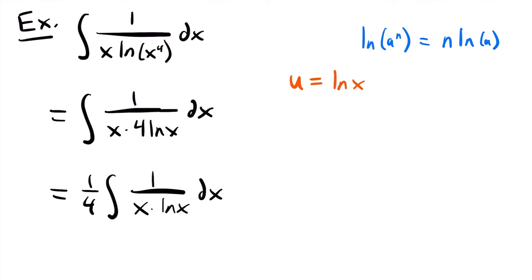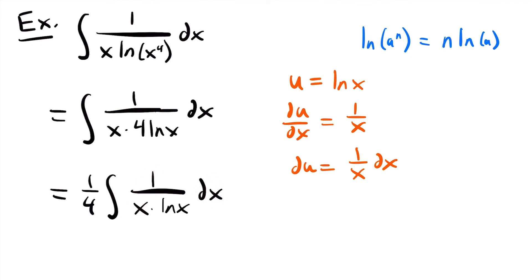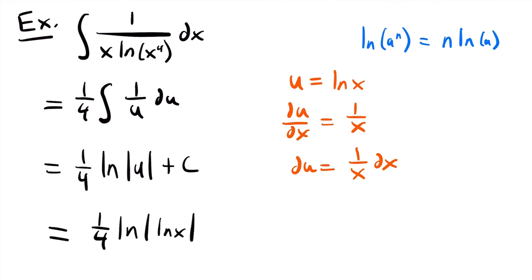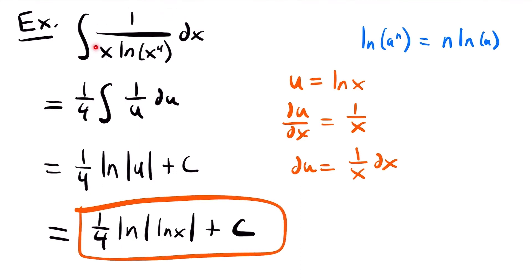We set u equal to the natural log of x, so du/dx equals 1 divided by x. Multiplying both sides by dx, du equals 1 divided by x dx, which is in our integral. Replacing the natural log of x with u and 1 divided by x dx with du, we have 1/4 times the integral of 1 divided by u du. Using the log rule, this equals 1/4 times the natural log of the absolute value of u plus c. Replacing u with the natural log of x, our final answer is 1/4 times the natural log of the absolute value of the natural log of x plus c.